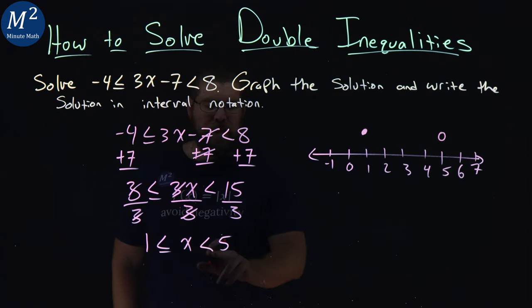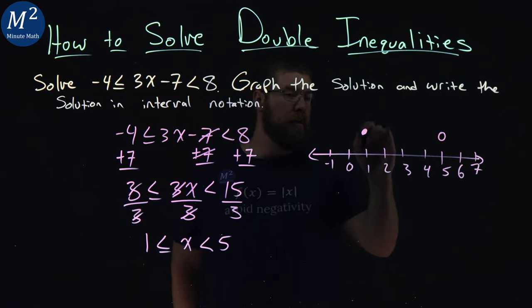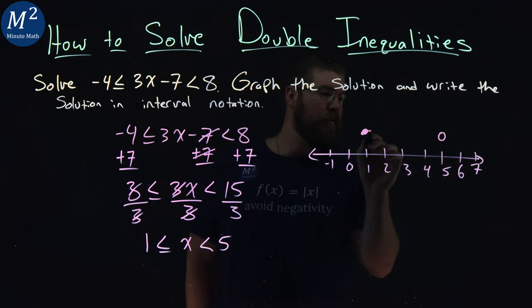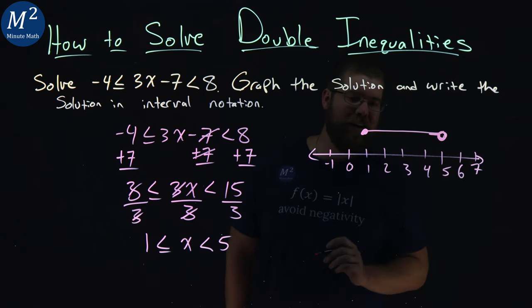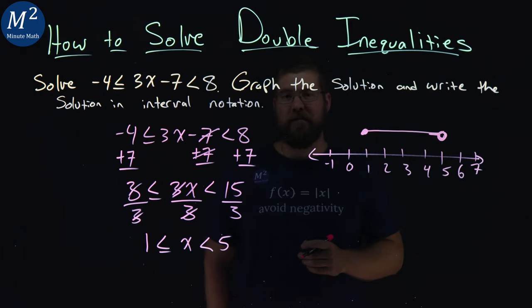We put an open circle there. And x is between these two values, one and five. So we draw a line between these two. Now if I can draw a better circle, well, there you go. All right. So we have our graph there from one to five.